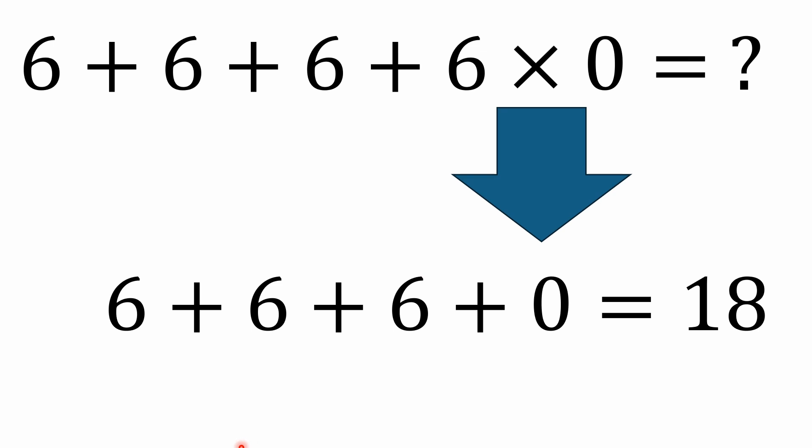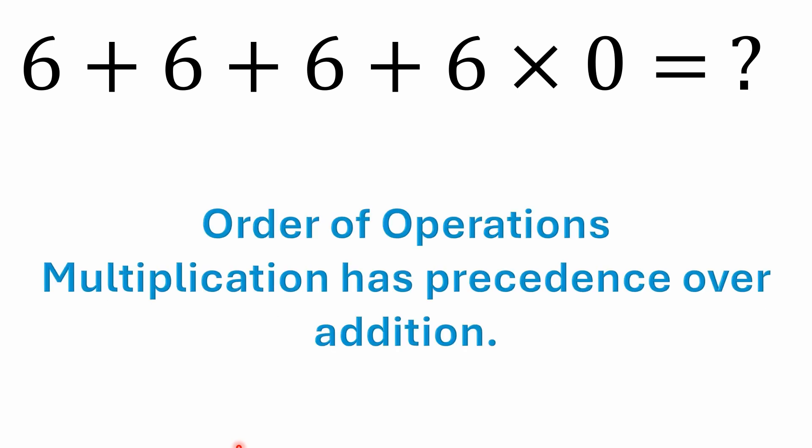I think it's mostly some older folks who have completely forgotten about multiplication by zero. But it doesn't matter if it's zero times six or six times zero — they both equal zero. Two times three is six; three times two is still six. The answer is definitely 18.